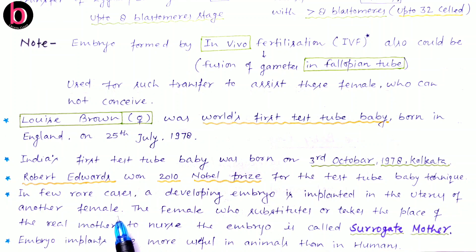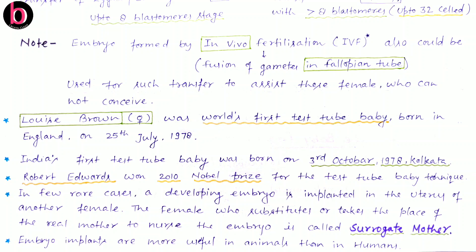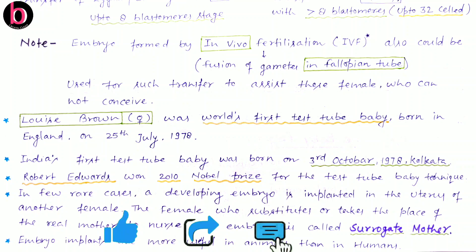In a few rare cases, a developing embryo is implanted in the uterus of another female. The female who substitutes or takes the place of the real mother to nurse the embryo is called a surrogate mother, and the process is known as surrogacy. Surrogacy is used when a female is not capable of carrying pregnancy due to a non-supportive uterus, job involvement, or other reasons. These practices are common in western countries but not very common in India.